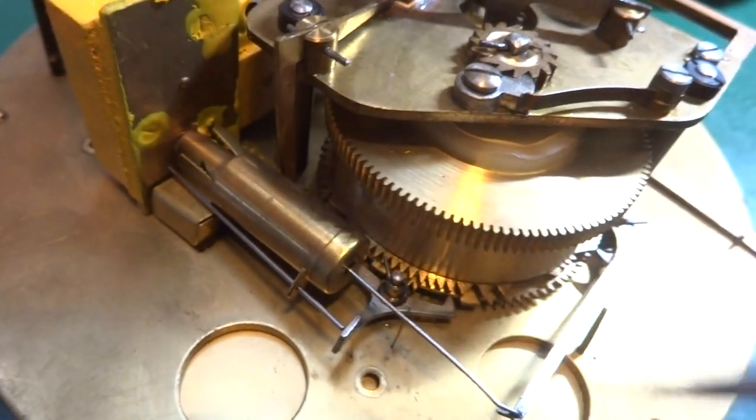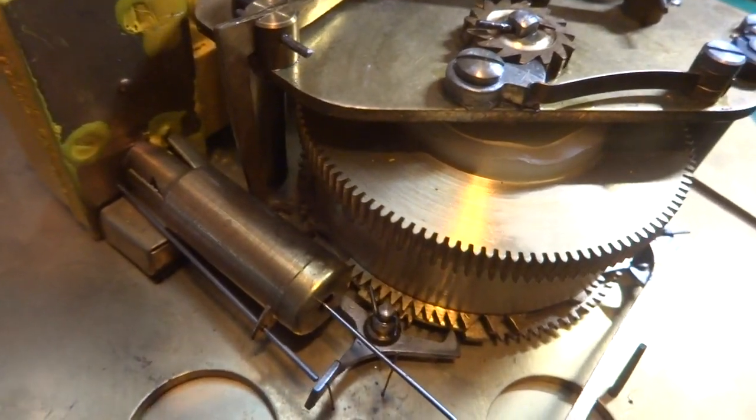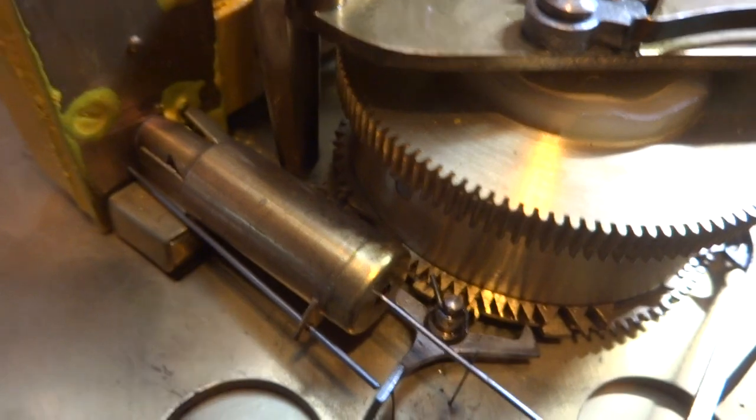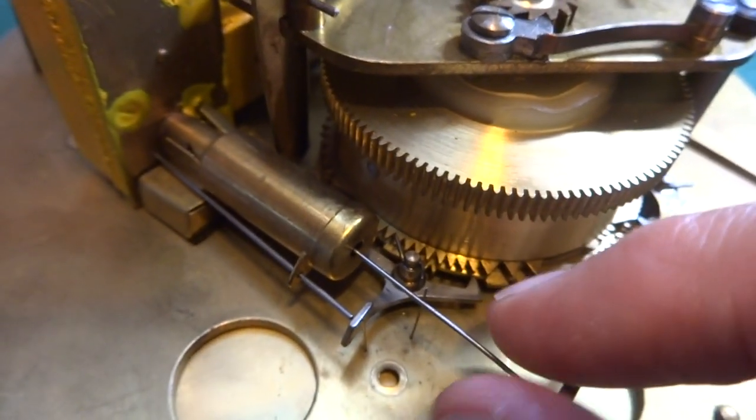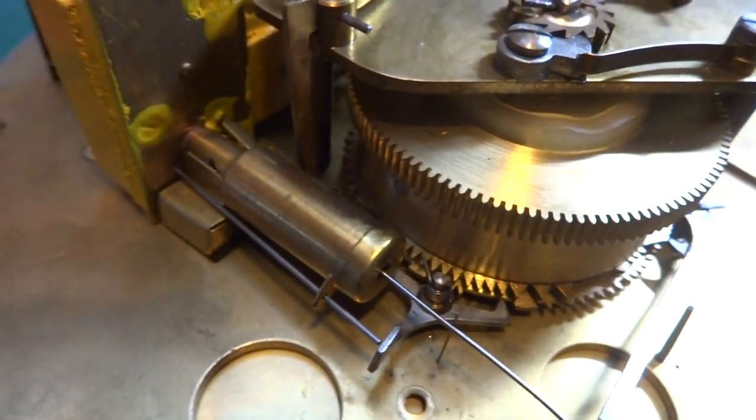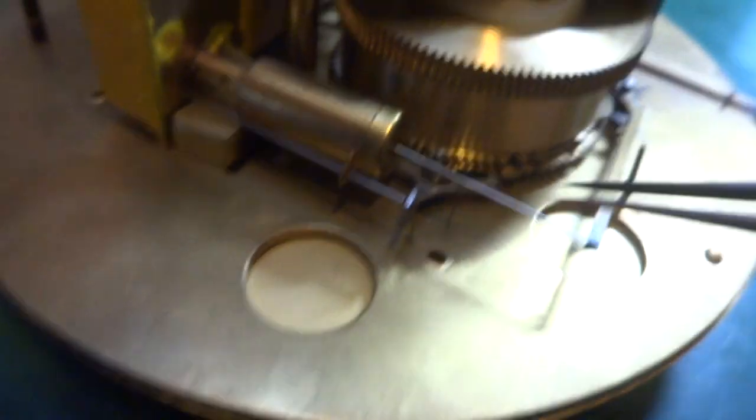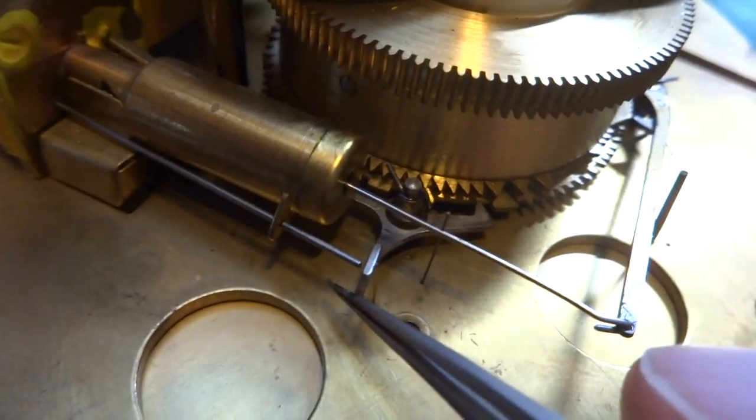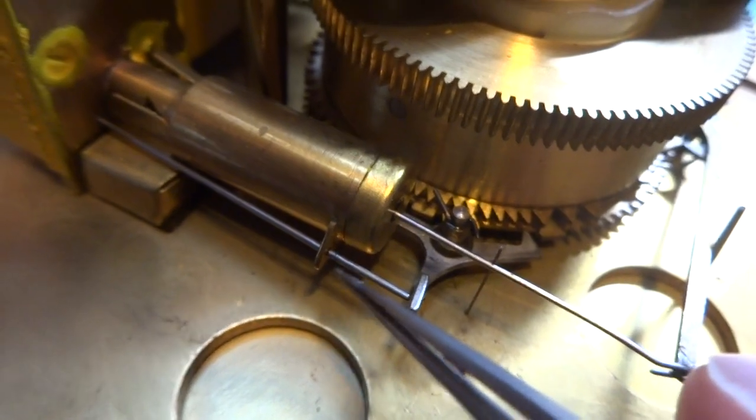As this lever pushes inside the whistle, that changes the pitch and makes it higher. As this is out, the pitch would be lower, a deeper sound. This paddle right here controls the airflow through this rod. There's a tiny spring inside, and this is also controlled by a second set of cams on the going barrel.